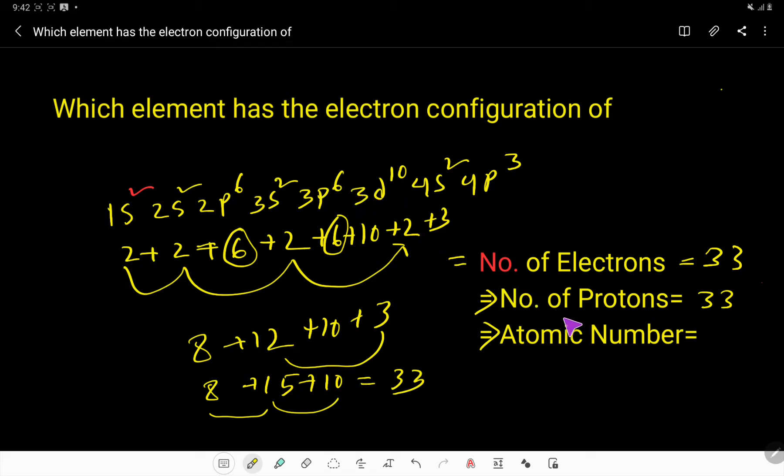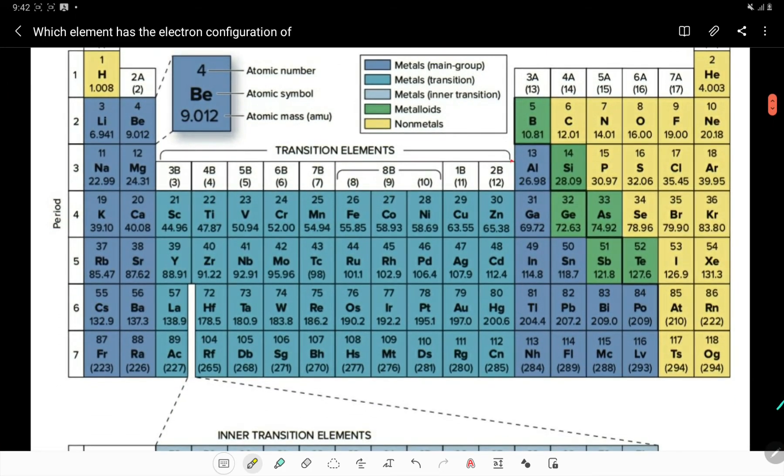And we also know that the number of protons is called atomic number. So its atomic number will be 33. Now we have to use our periodic table to find out the name of this element whose atomic number is 33. So let us open the periodic table now and look.